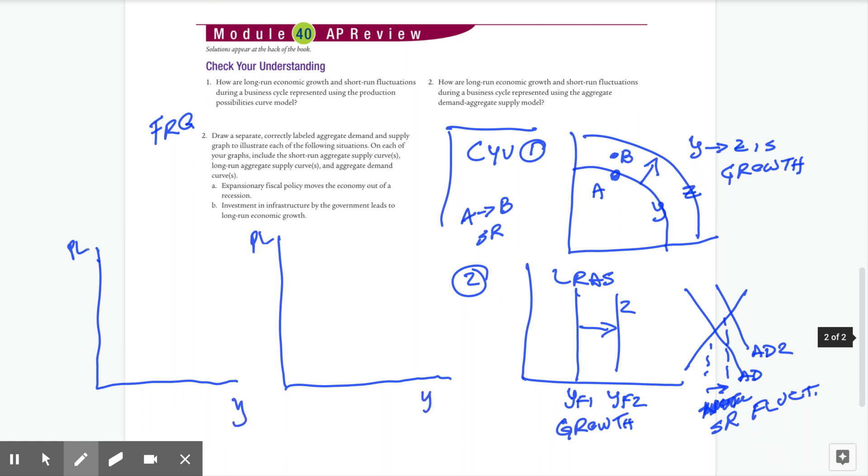And for the first one, it says expansionary fiscal policy moves the economy out of a recession. So we're going to start in a recession. So we need an LRAS, AD, and SRAS. And we would say we start at Y1. And expansionary fiscal policy would push aggregate demand to the right. And you'd go from point A to point B. So this is the one for A.